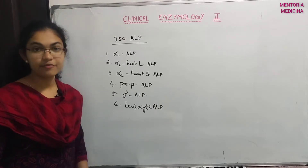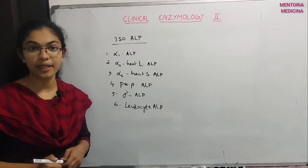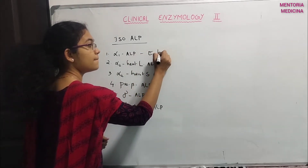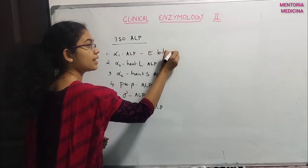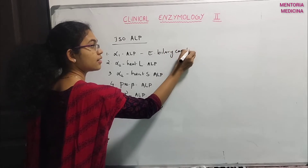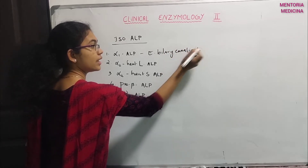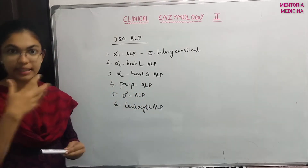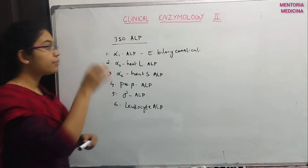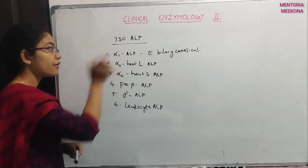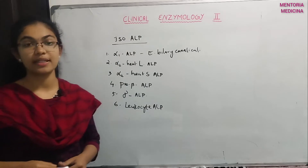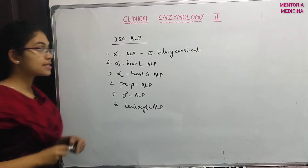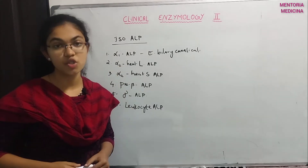Alpha-1 alkaline phosphatase is found in the epithelium of bile canaliculi, and it functions to relieve bile flow. An increased level of alpha-1 alkaline phosphatase in bile canaliculi indicates obstructive jaundice.